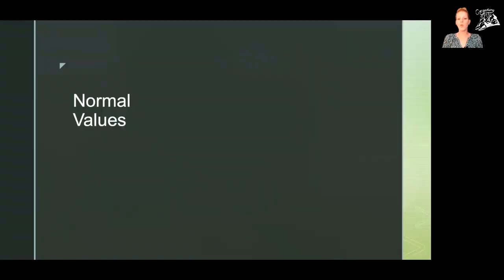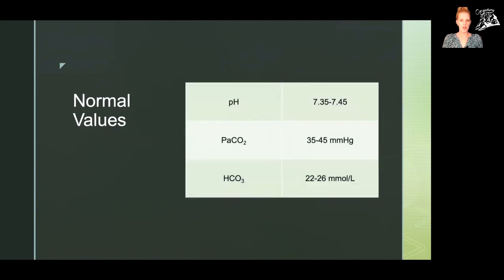In order to know what is abnormal we need to know what is normal. I highly recommend memorizing these values — it's not as hard as you would think. Most of us know that the normal pH is 7.35 to 7.45. If you just drop the 7 for the partial pressure of carbon dioxide, you end up with a normal value of 35 to 45. Bicarbonate is going to be 22 to 26 as our normal.